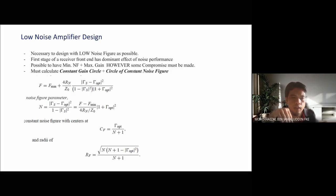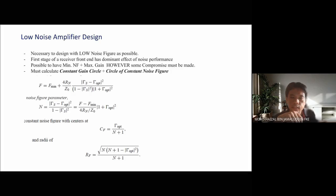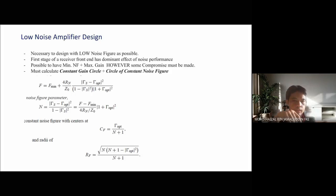From that, you need to know the minimum noise figure and the noise figure value. Using the n value, we can calculate the center C_F and radius R_F of the constant noise figure circle. By knowing n and gamma_optimum, you can calculate both the center and radius of the constant noise figure circle.